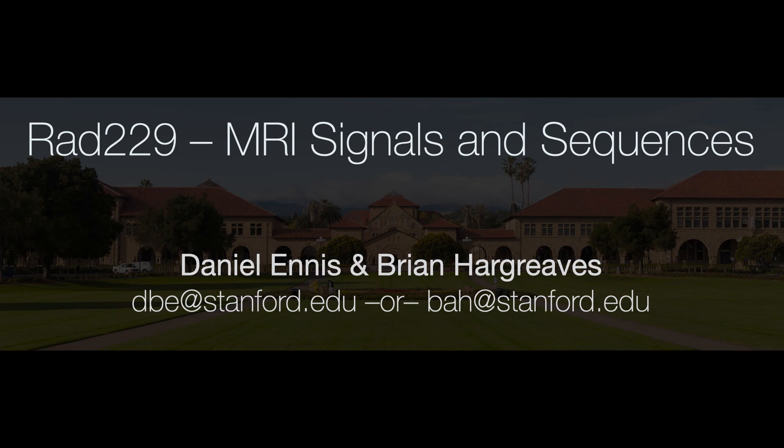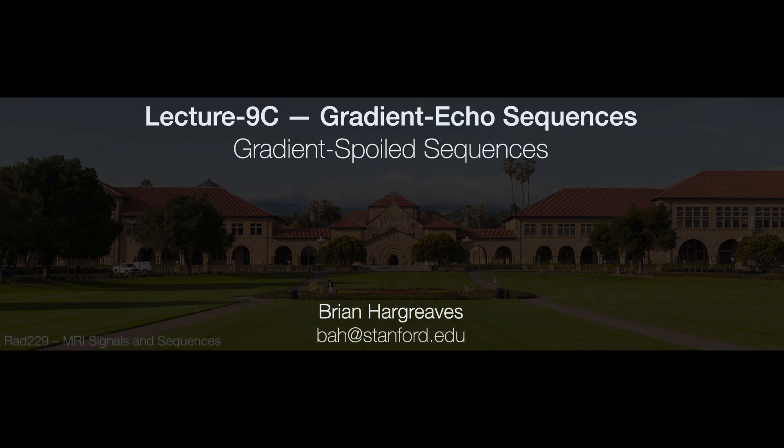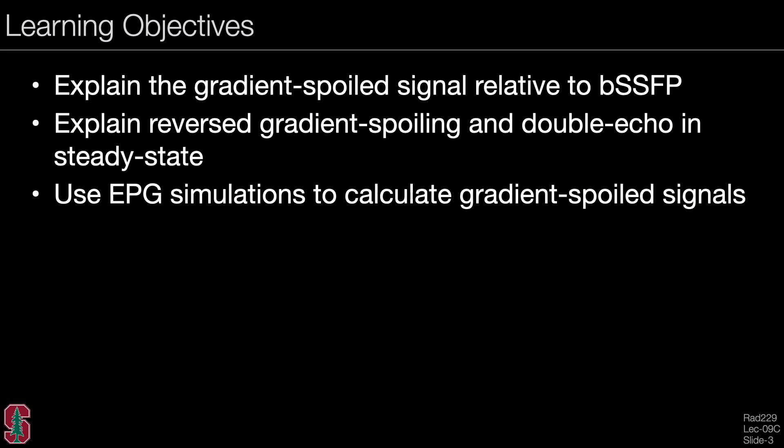This lecture is part of a series for Rad 229 MRI Signals and Sequences offered in the Department of Radiology at Stanford University. The ninth lecture on gradient echo sequences is divided into four parts. Lecture 9C covers gradient spoiling. The learning objectives are to explain the gradient spoiled signal relative to the balanced SSFP signal, to explain reversed gradient spoiling and double echo in steady state, and to use EPG simulations to calculate gradient spoiled signals.